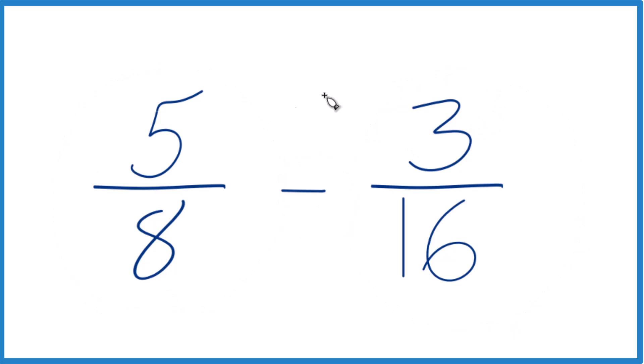Whenever we're subtracting fractions or adding fractions, we need to get a common denominator. That's the number here on the bottom. If we have the same denominator, then we just deal with the numerator, keep that same, then keep that same common denominator, and we got it.